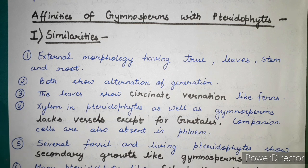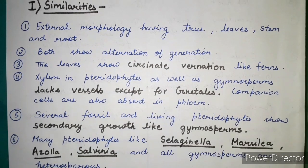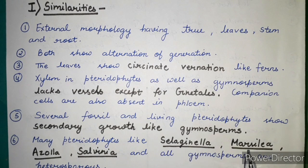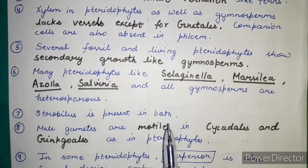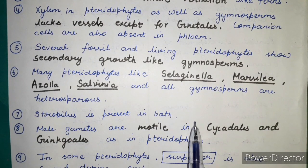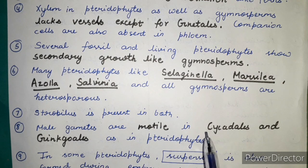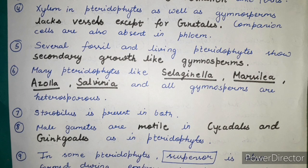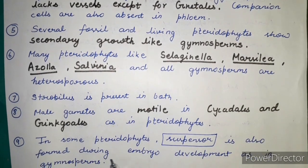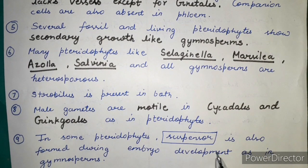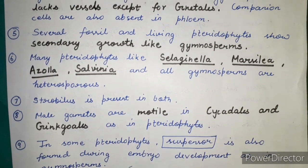Several fossil and living pteridophytes show secondary growth, like the gymnosperms. Many pteridophytes such as Selaginella, Marsilia, Azolla, and Salvinia — along with all gymnosperms — are heterosporous in nature. Strobilus is present in both groups. The male gametes are motile in Cycadales and Ginkgoales, as in pteridophytes.